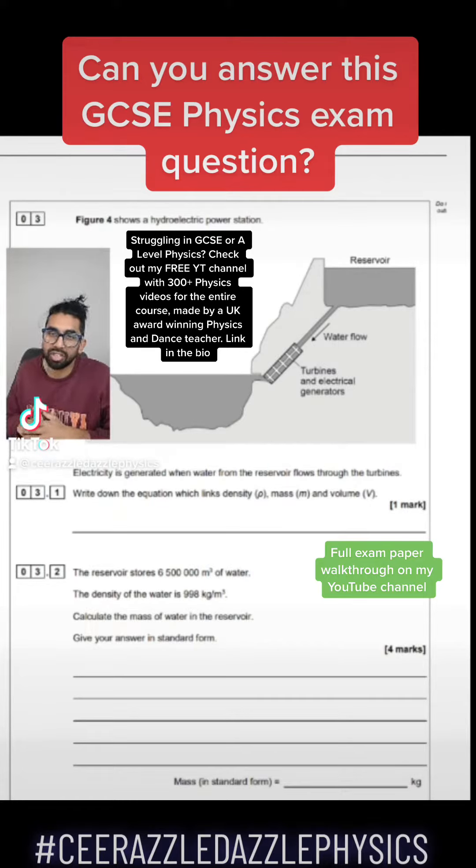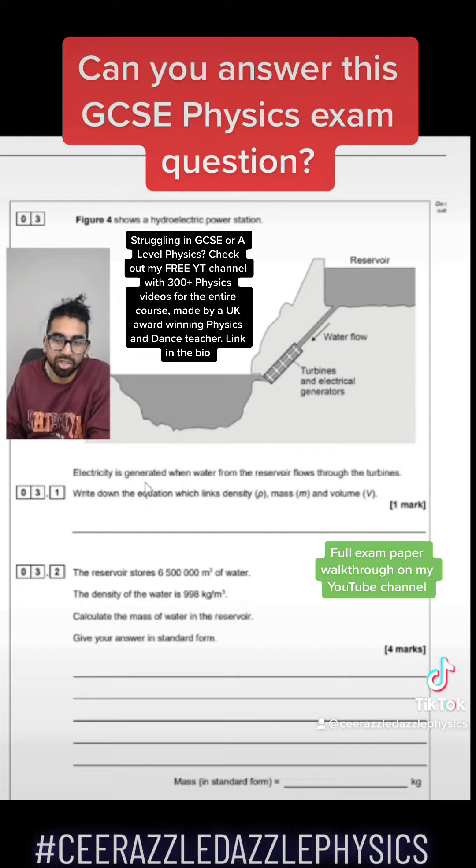Okay, can you answer this physics GCSE question? Figure 4 shows a hydroelectric power station. Electricity is generated when water from the reservoir flows through the turbines.